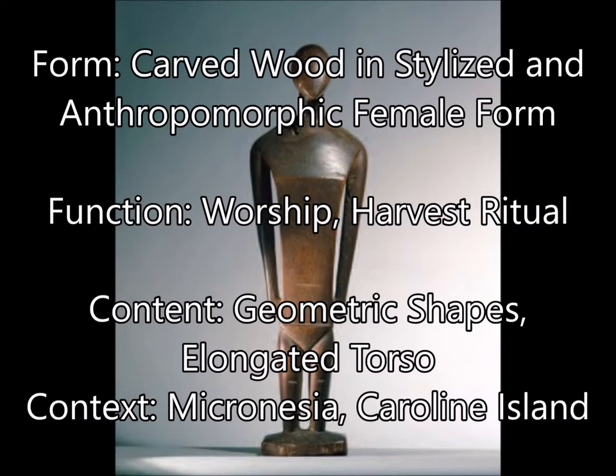Here we have the female deity or goddess. She is made from carved and oiled wood in a stylized and anthropomorphic female form. Remember, anthropomorphic means it has human features but is not actually human. For function, you can put that it was made to be worshipped, especially during a harvest ritual. For content, you can add those geometric shapes, very angular, elongated torso. And for context, you can put Micronesia, or if you want to be more specific, Caroline Island.